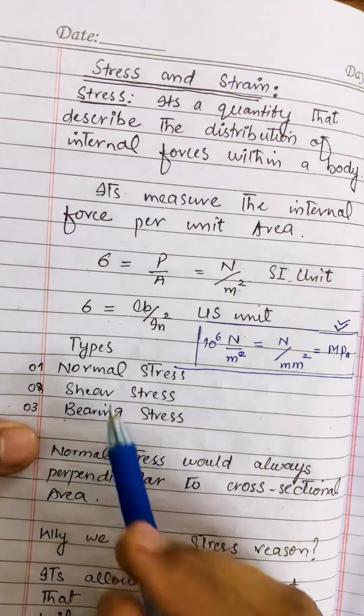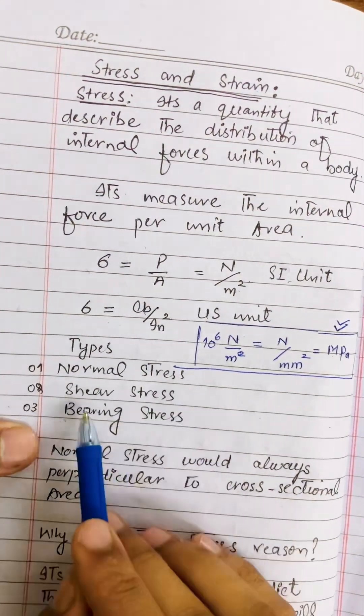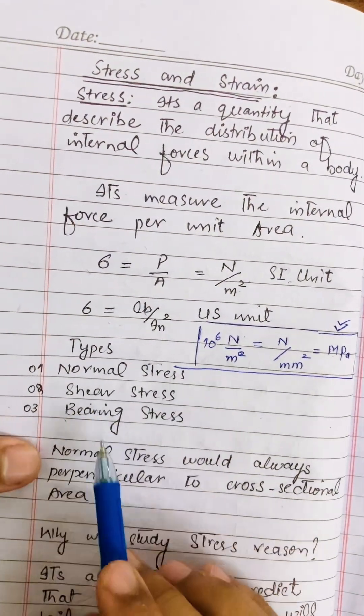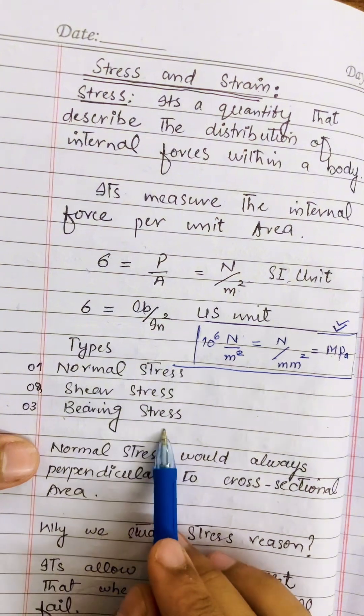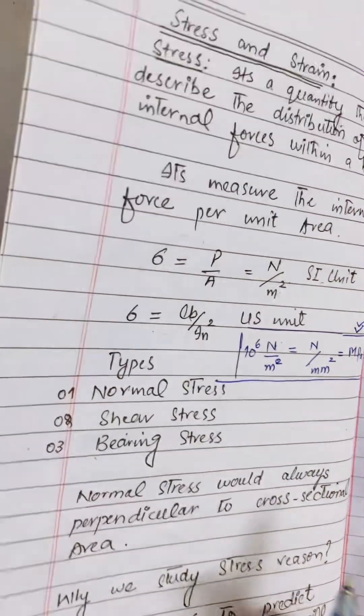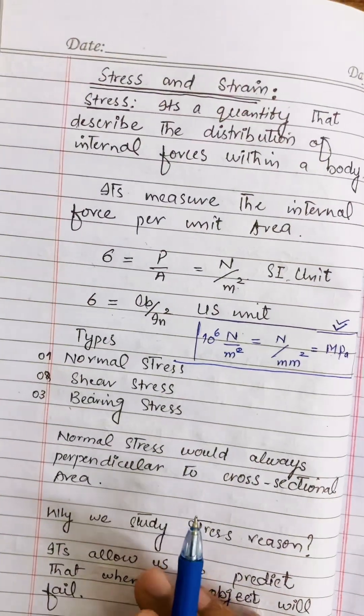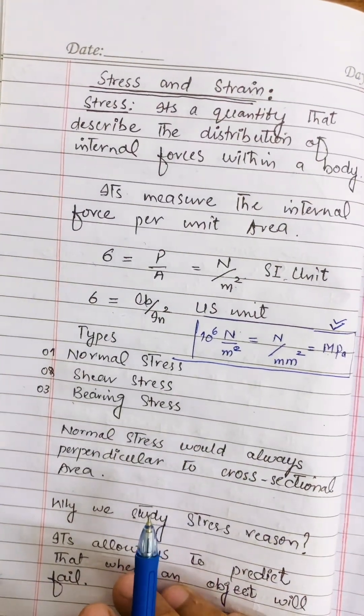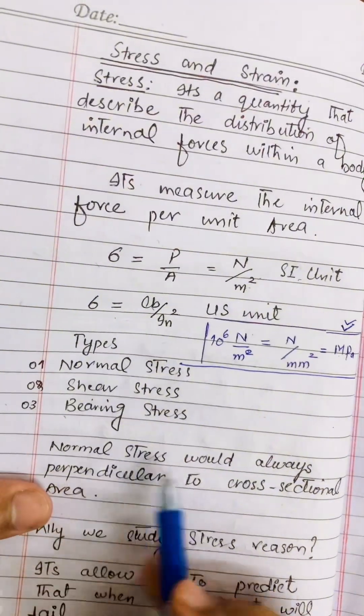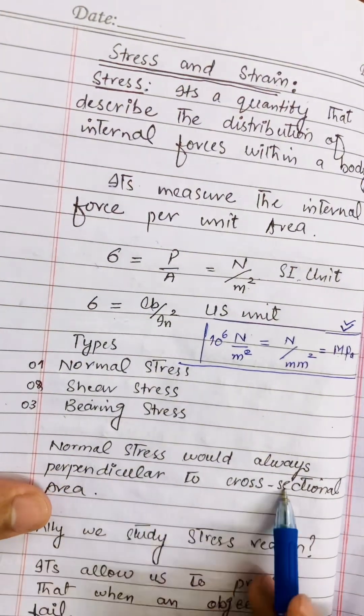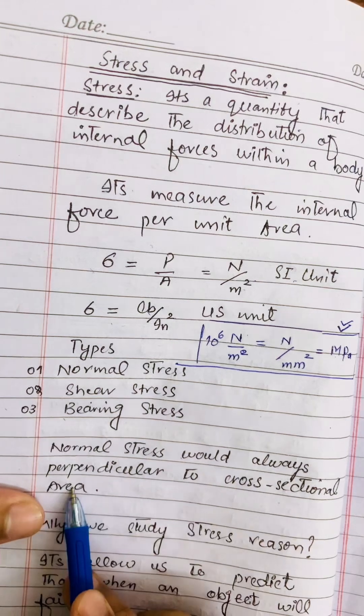There are three types of stresses: normal stress, shear stress, and bearing stress. Normal stress is always perpendicular to the cross-sectional area — when a force is applied perpendicular to the cross-section of an object, that is normal stress.